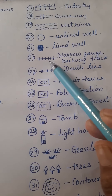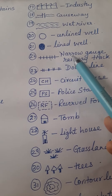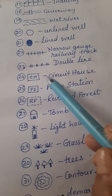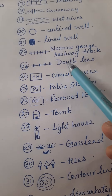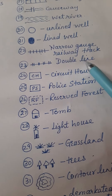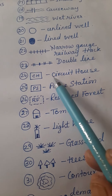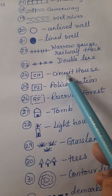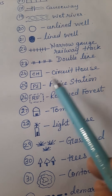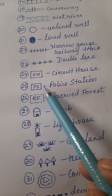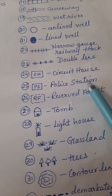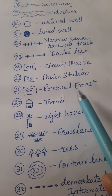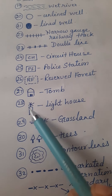This is a railway sign which shows it is a narrow gauge track. This is a double line. This is CH, which means circuit house. PS stands for police station. RF stands for reserved forest.